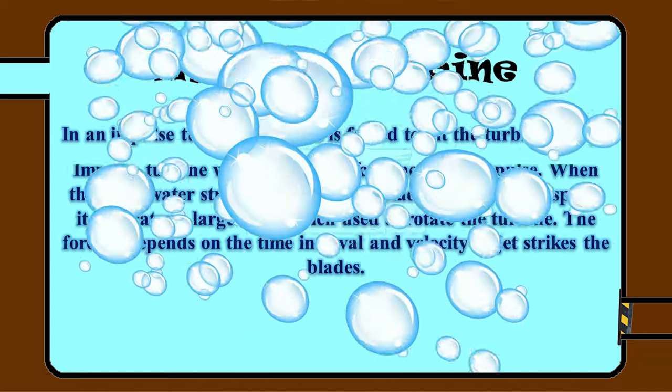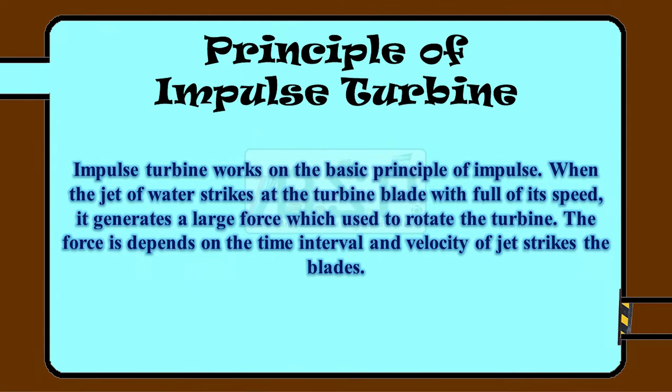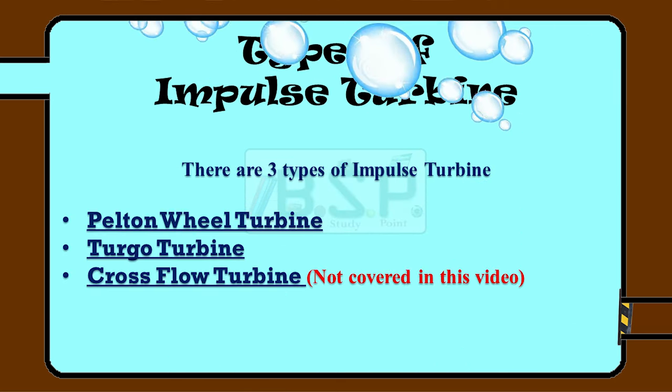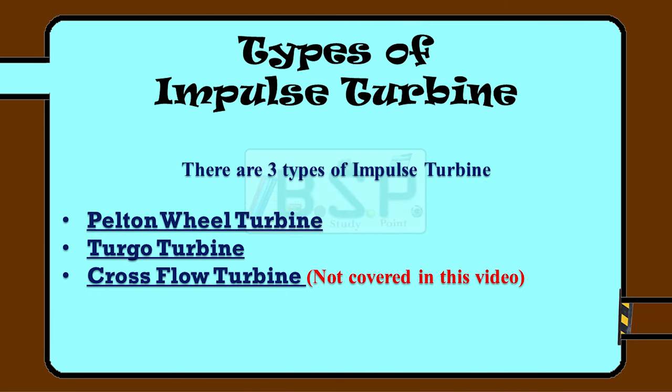You can see the principle of impulse turbine. Now there are three types of impulse turbines: Pelton wheel turbine, Turgo turbine, and cross flow turbine.